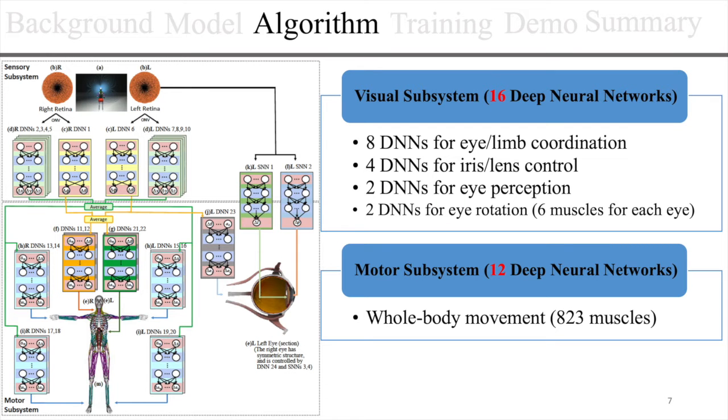The sensory motor controller includes a total of 28 deep neural networks for the whole body motor control, eye-limb coordination, eye perception and rotation.